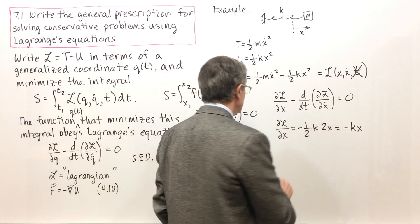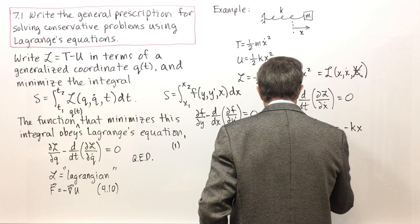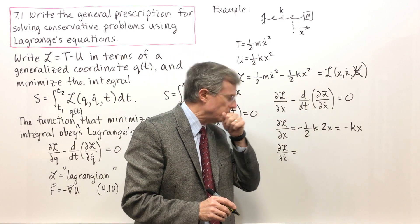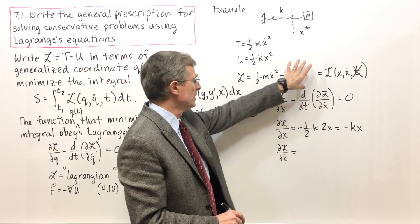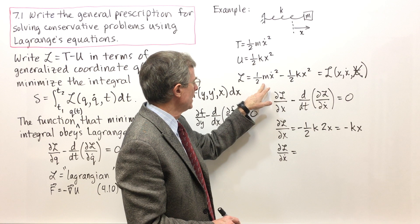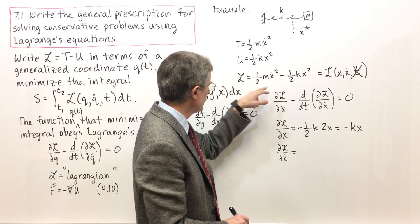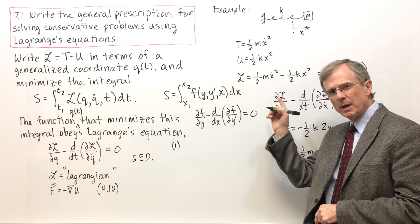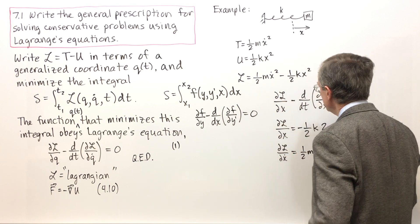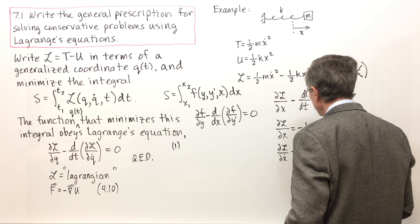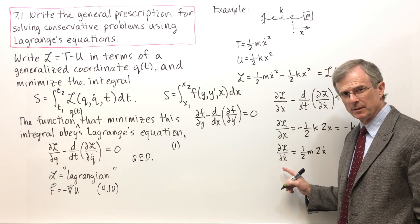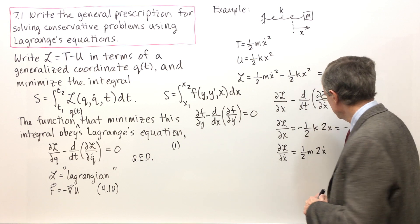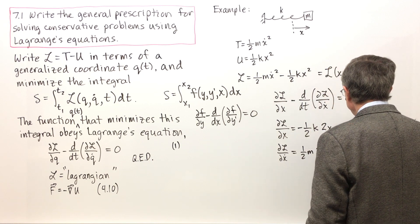We need dL by dx dot. Well here's L. When I take the derivative with respect to x dot, I'm going to hold x constant this time. So that term is just a constant. And the derivative with respect to x dot will only involve this first term. Derivative x dot squared with respect to x dot is 2x dot. Now remember, we're not taking the derivative with respect to time here. We're taking the derivative with respect to x dot while holding x and time constant. So the 2's cancel and we get mx dot.